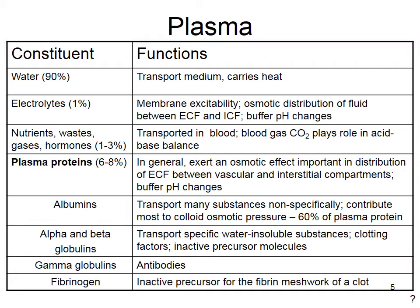Alpha and beta globulins specifically transport water-insoluble substances. Clotting factors are also globulins, and there are lots of inactive precursor molecules. They're made by the liver, as is albumin, and play lots of different roles we'll discuss throughout the semester. Gamma globulins are our antibodies — proteins that are part of the immune system. Fibrinogen is an inactive precursor of fibrin; once activated into fibrin, it forms the mesh that your blood clot forms from, converting flowing liquid blood into a solid clot.